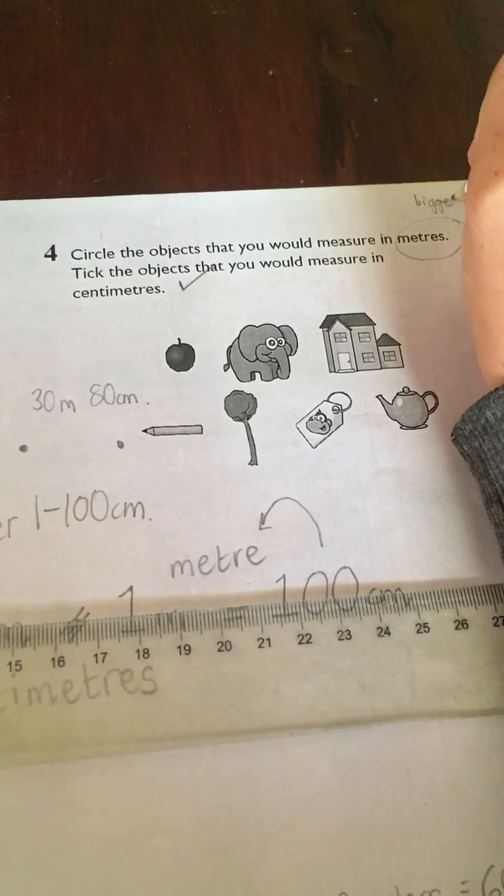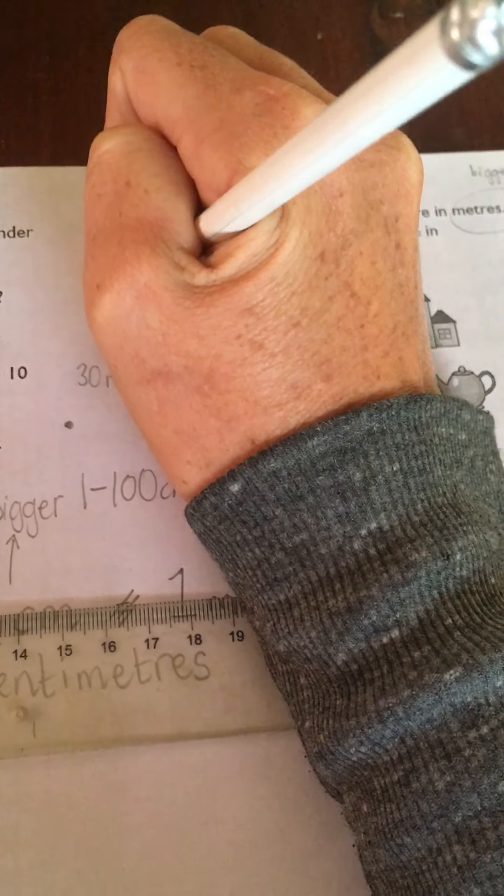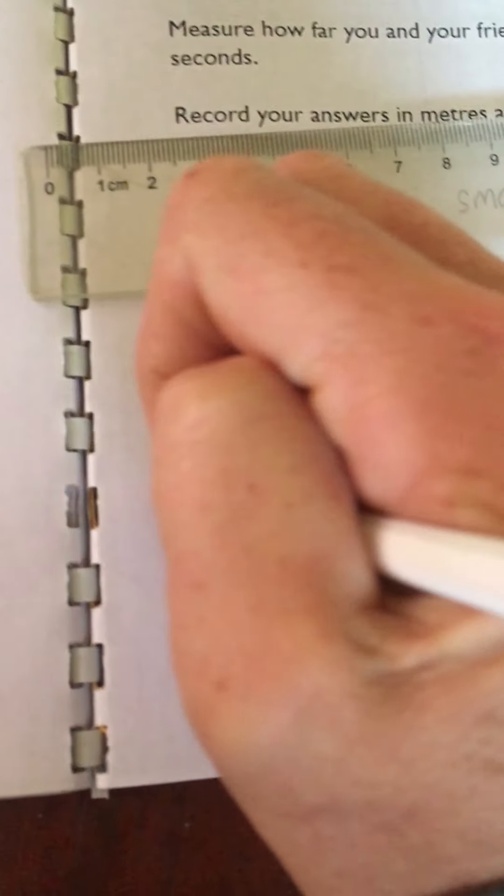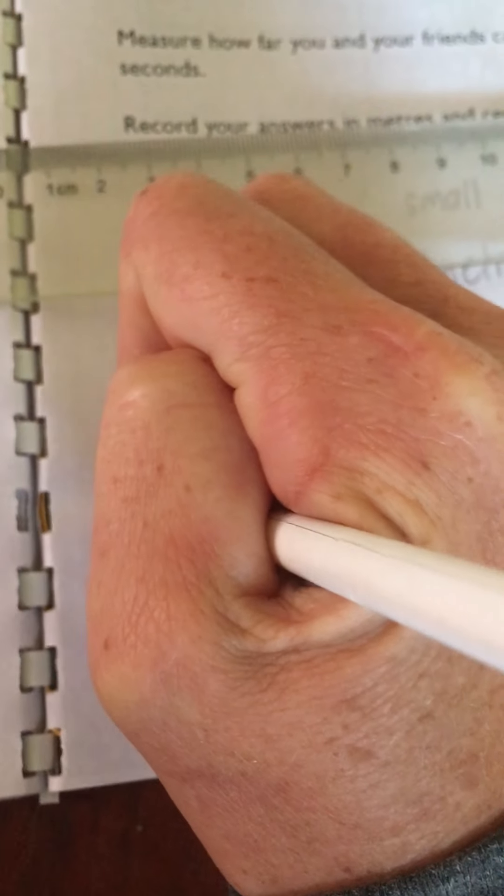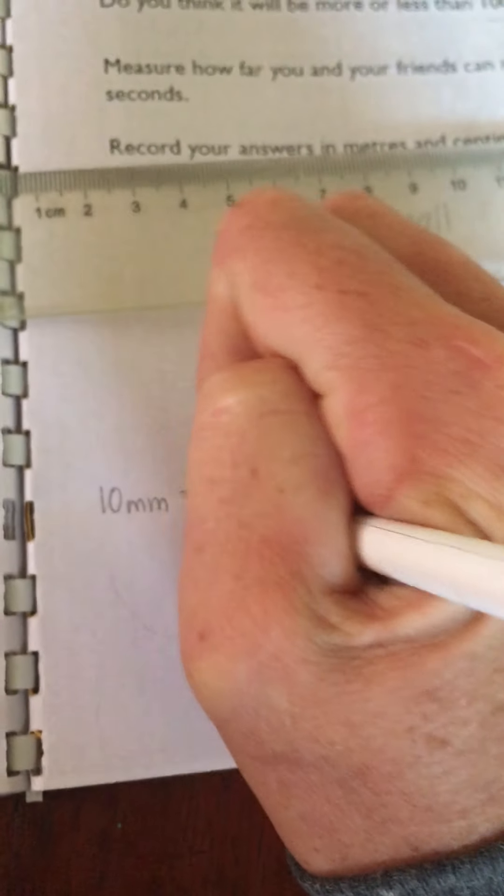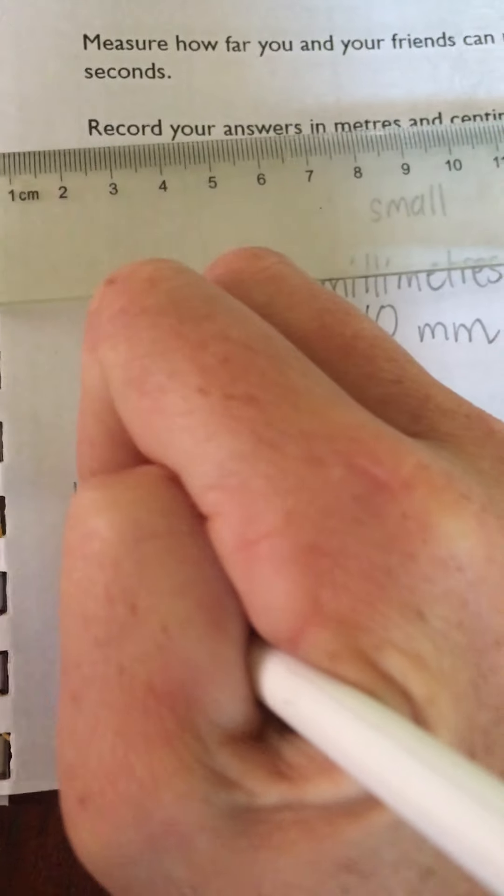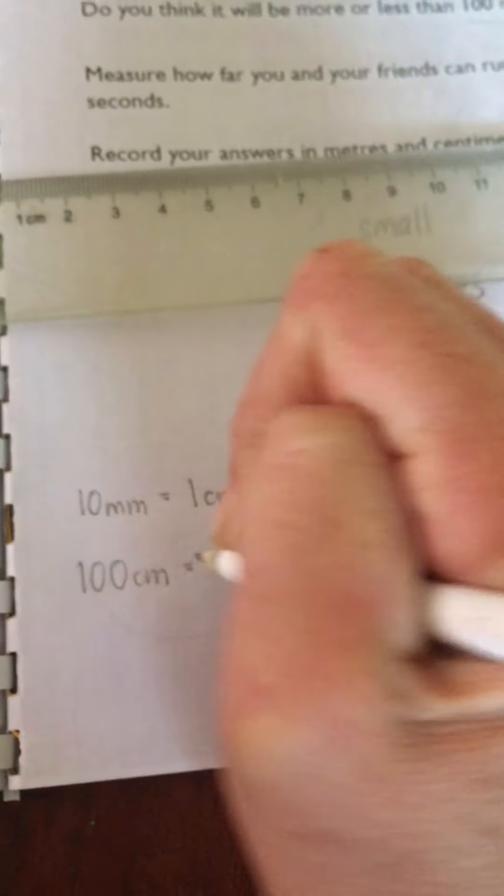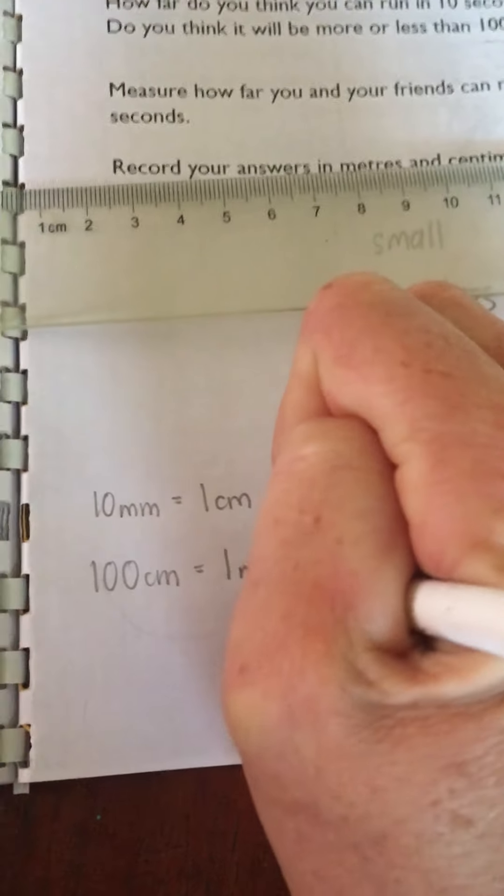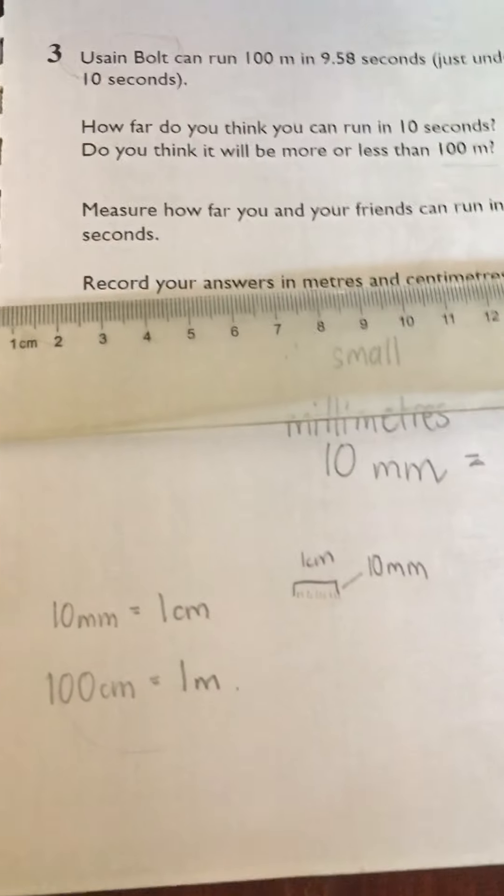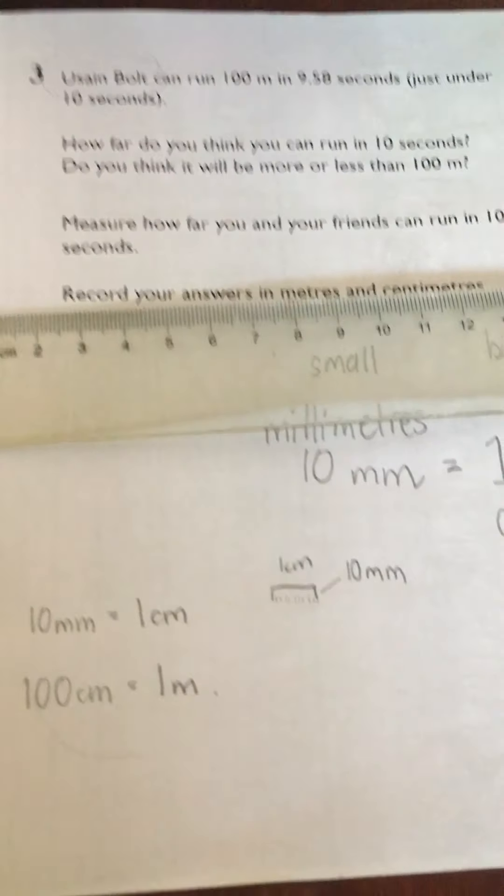In your books you can write down like this: 10 millimeters equal one centimeter, and 100 centimeters equal one meter. Good luck! I'm so looking forward to see how fast you can run.